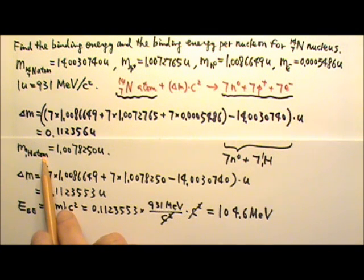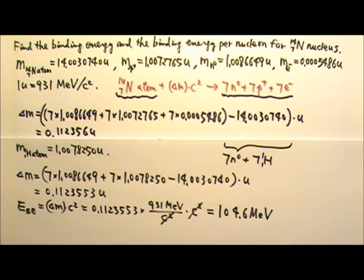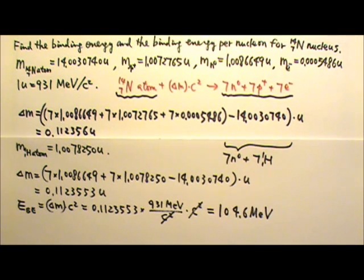But the binding energy for electrons is much, much smaller compared to the nuclear binding energy. So we can just ignore the binding energy for the electrons. The binding energy for the electrons involves electromagnetic force, but the nuclear binding energy involves much stronger nuclear strong force.